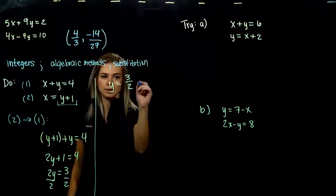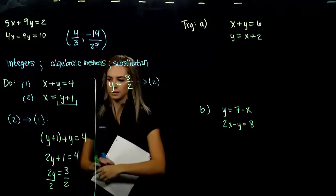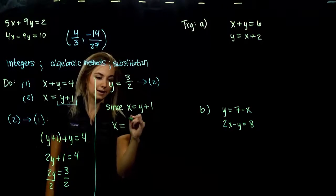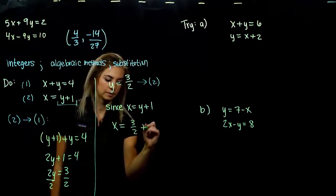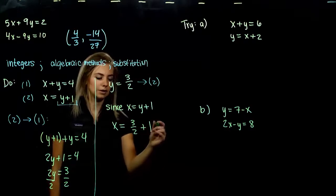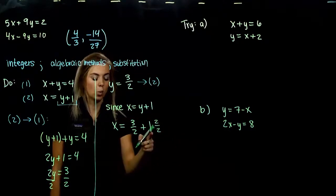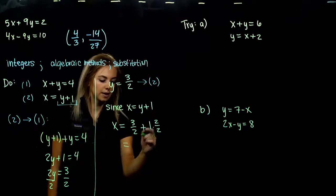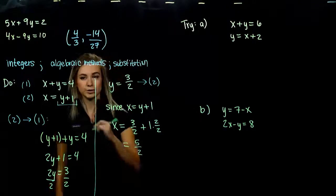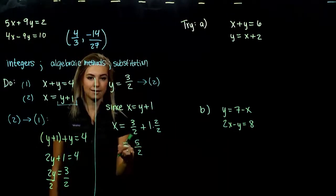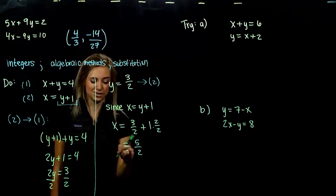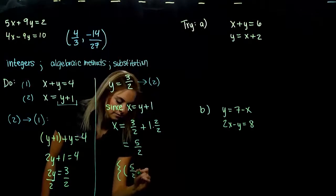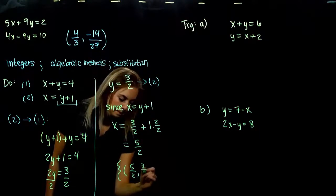Substituting y equals 3 halves into equation 2: since x equals y plus 1, we get x equals 3 halves plus 1. We rewrite 1 as 2 over 2, so x equals 5 halves. Our solution to this system has fractional coordinates — neither x nor y is an integer. The solution set contains this one point: x comes first, so it's (5/2, 3/2).